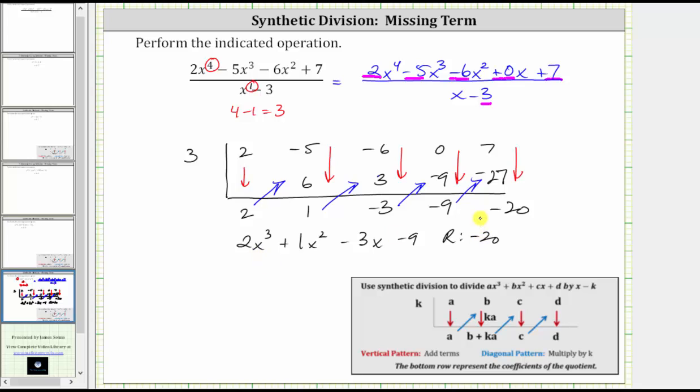And there are a couple of ways to express the final answer. The most common way would be to write the quotient, which again is two x cubed plus x squared minus three x minus nine. And then because the remainder is negative twenty, we write minus twenty over the divisor of x minus three.